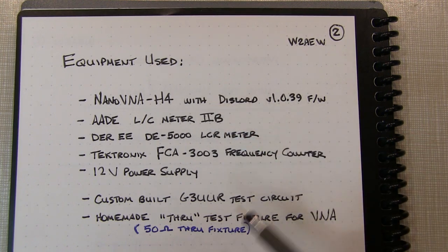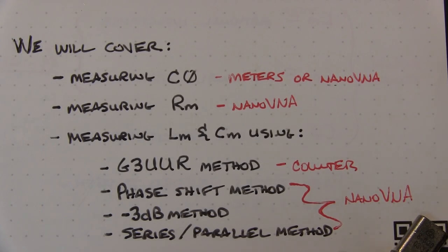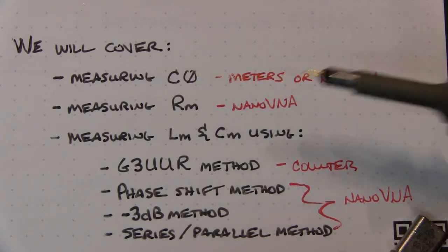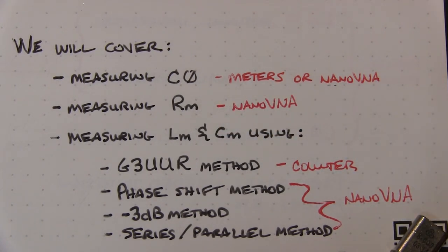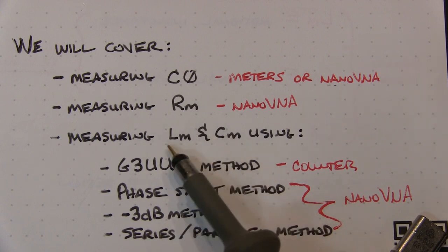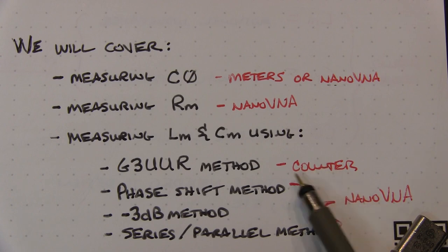For all the VNA measurements, I've got a homemade through test fixture which allows me to put the crystal in series with port 1 and port 2 of the VNA. We'll look at a couple of ways of measuring the holder capacitance, measure the motional resistance using the nanoVNA, and then look at four different methods for measuring the motional inductance and capacitance: the G3UUR method, the phase shift method, the minus 3 dB method, and the series-parallel method. The first one uses the counter; the latter three use the nanoVNA.